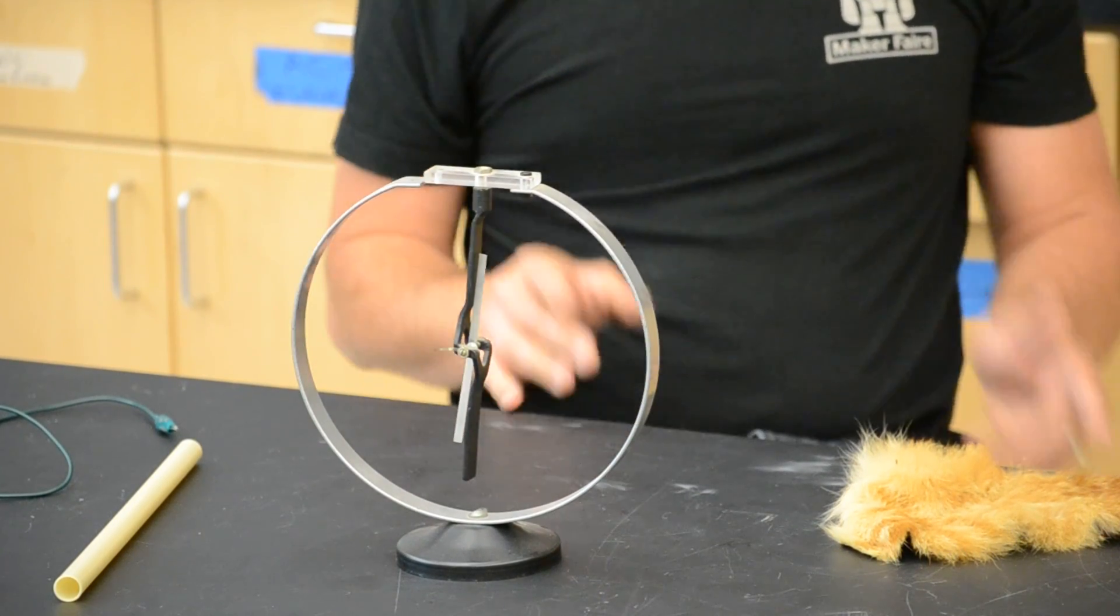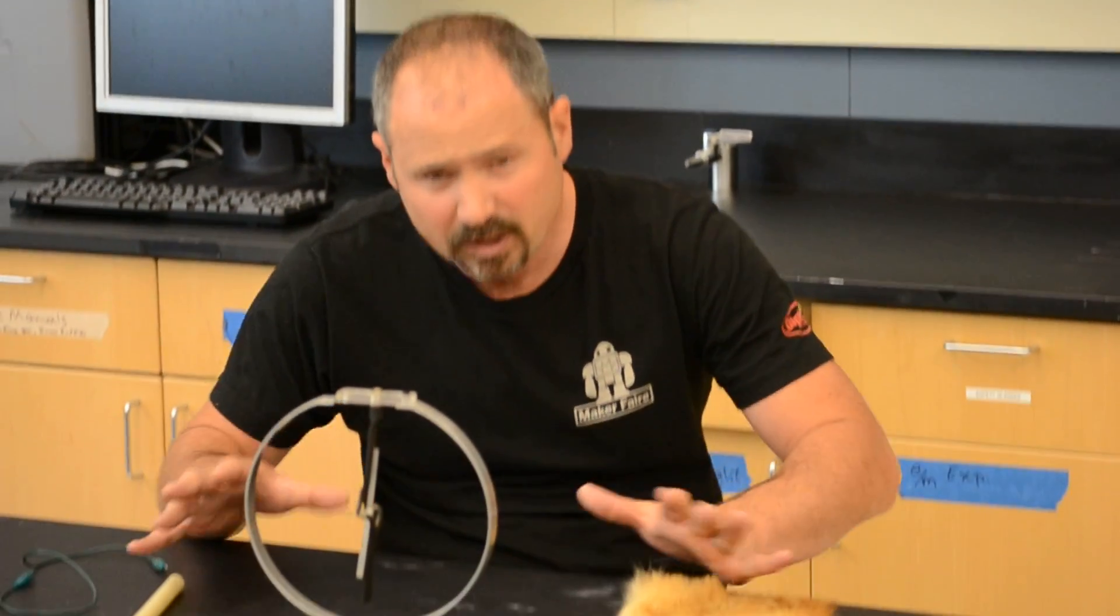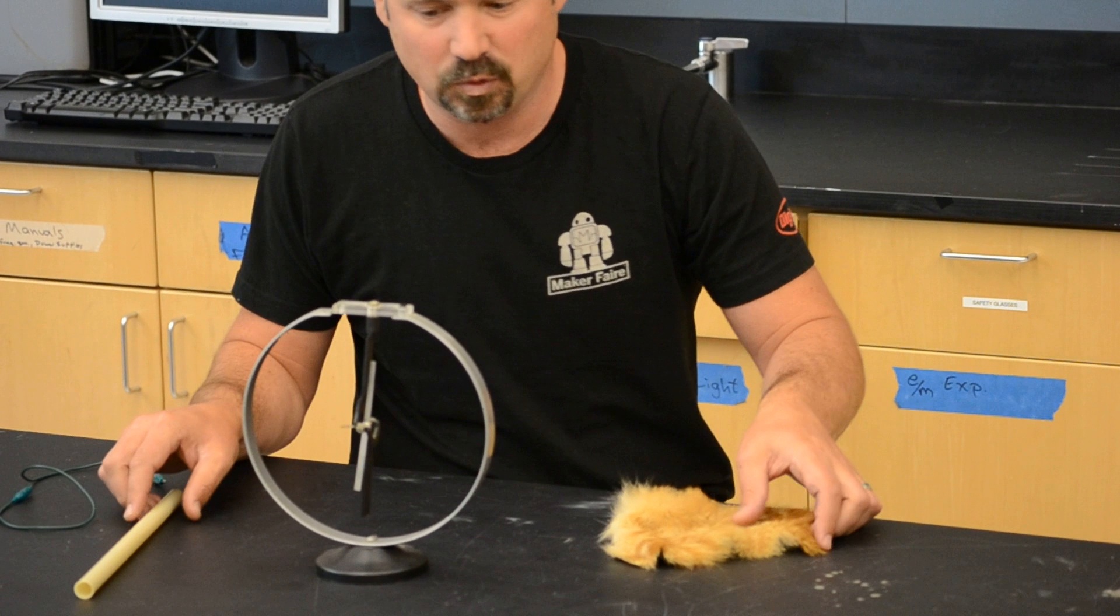Now all you need to know about electrostatics at this level is that like charges repel and opposite charges attract. To see a more mathematical basis see my videos on the electrostatic triangle. But here we just want to understand how things work.